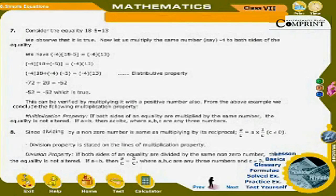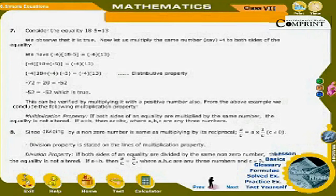7. Consider the equality 18 − 5 = 13. Multiplying both sides by −4: (−4)(18 − 5) = (−4)(13). Expanding using the distributive property: (−4)(18) + (−4)(−5) = −4 × 13, giving −72 + 20 = −52, so −52 = −52, which is true. From this example we conclude the Multiplication property: if both sides of an equality are multiplied by the same number, the equality is not altered. If a = b, then ac = bc, where a, b, c are any three numbers.